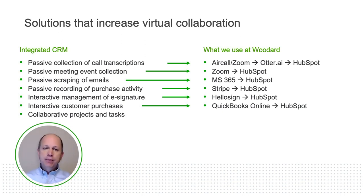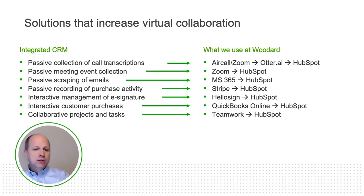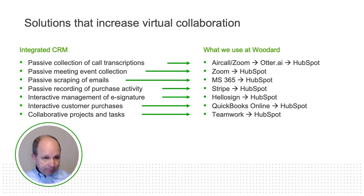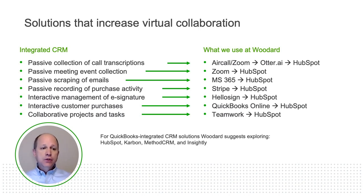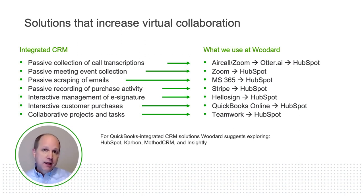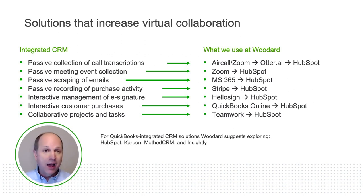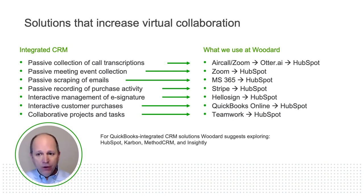Everything is visible and transparent within the company because information is the predecessor to productivity. Collaborative projects and tasks — we use Teamwork for our more complex projects, and that talks to HubSpot, so everything gets wrapped up in a bow. You're seeing how all roads lead to CRM, because CRM is where the ultimate collaboration takes place. For QuickBooks-integrated CRM solutions, I suggest exploring HubSpot, Carbon, Method CRM, and Insightly — they all talk to QuickBooks Online. When you have a CRM, you have liberated data from email, calls, and brains — three key prisons.